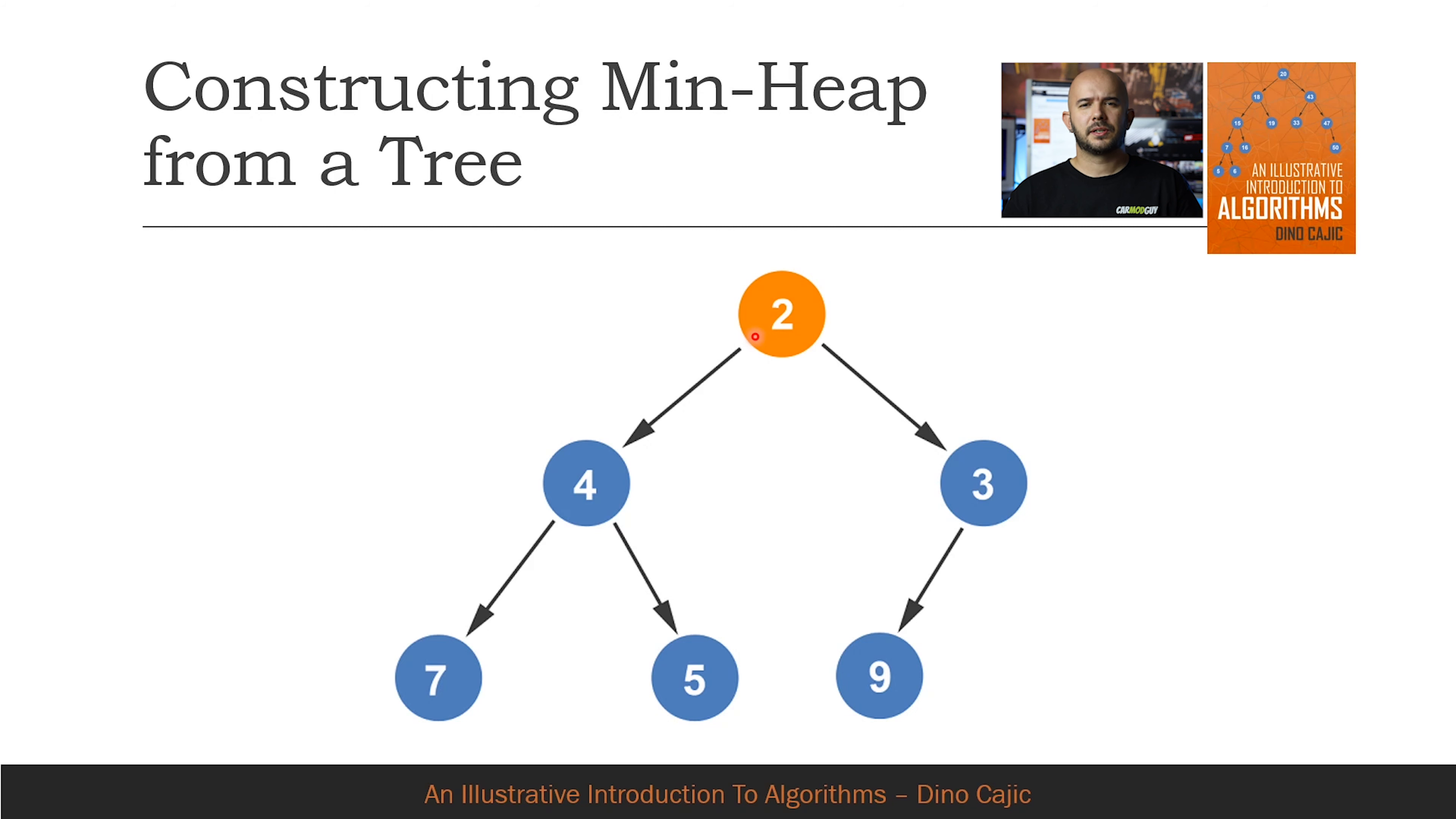One final iteration needs to occur to verify that the min heap is created. We start back at the third node. Since the third node doesn't have any children that are smaller than itself, we move to the second node. Similarly, the second node doesn't have any children that are smaller than it.